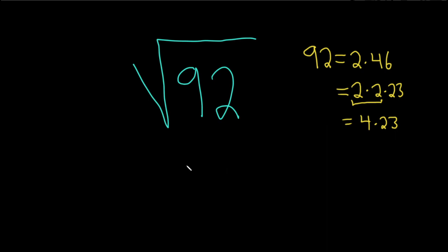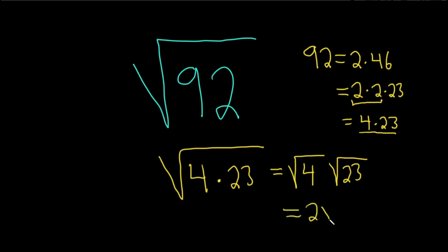So now we just come back over here and we replace the 92 with our 4 times 23. So this is 4 times 23. So this is equal to the square root of 4 times the square root of 23. And the square root of 4 is 2. So we have 2 times the square root of 23. And that would be the final answer.